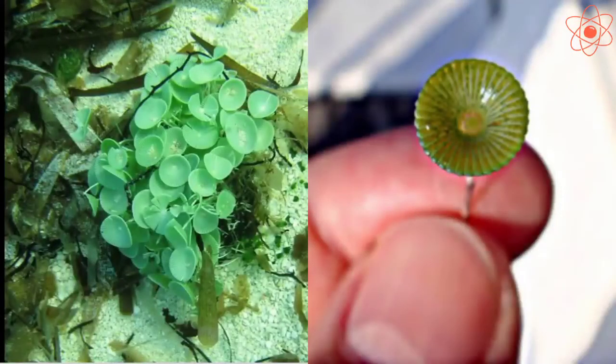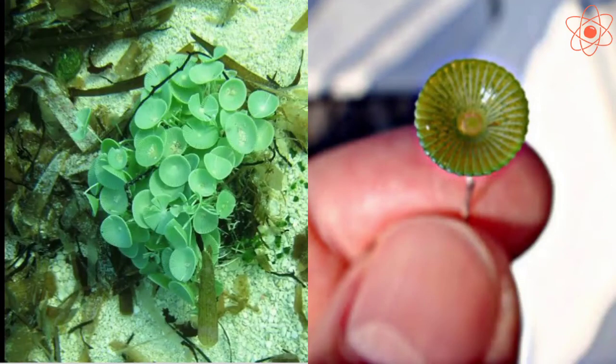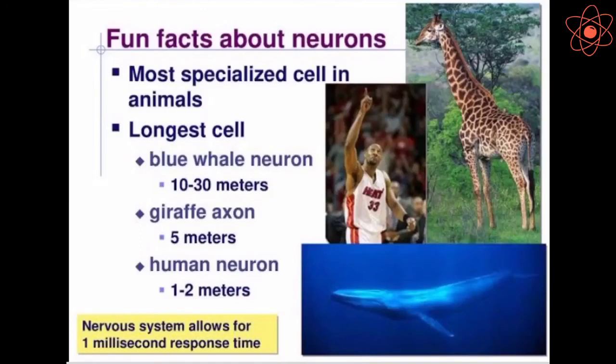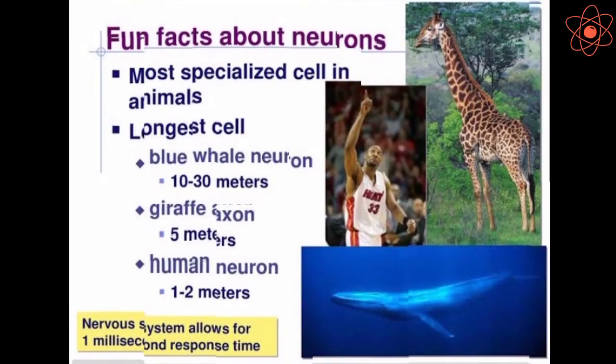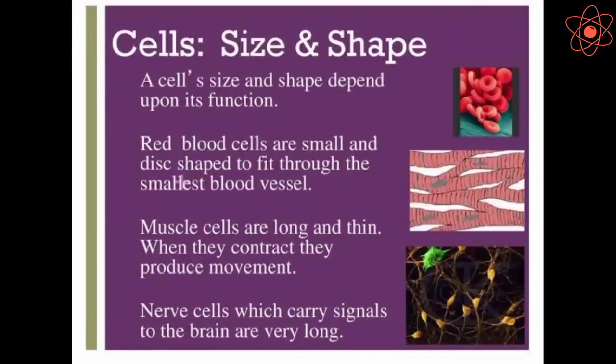The alga acetabulleria, a unicellular organism, consists of a single cell having a length of 10 cm. The size of the cell has no relationship with the body size of the organism. The size of the cell is related to its function.